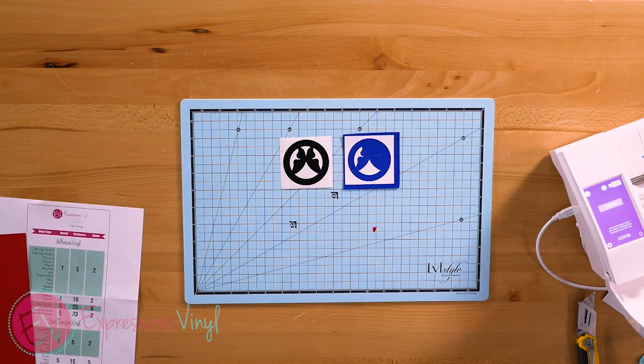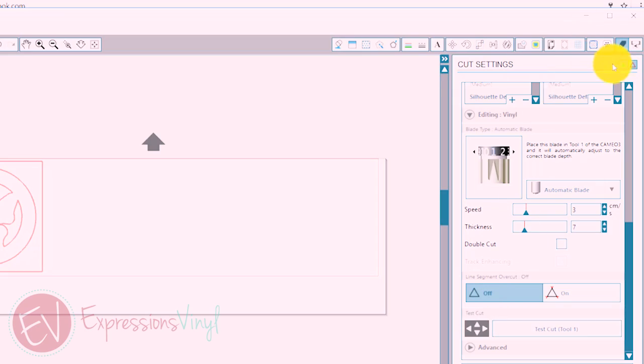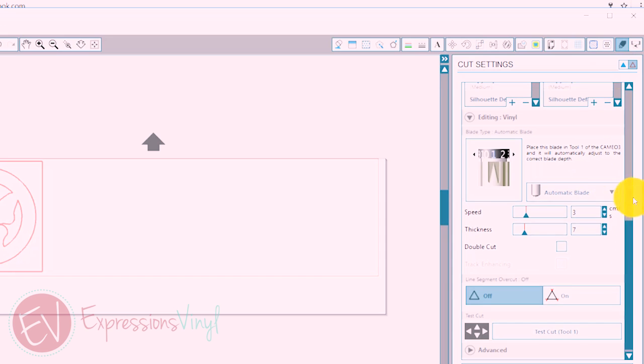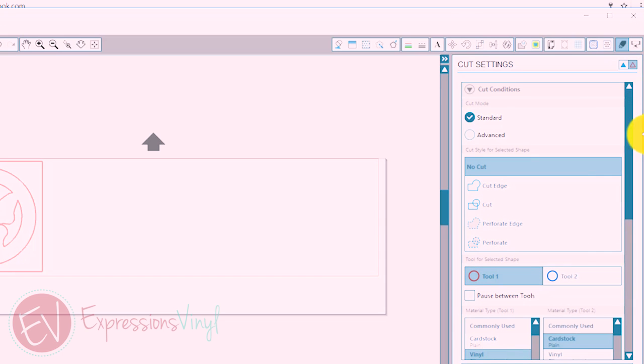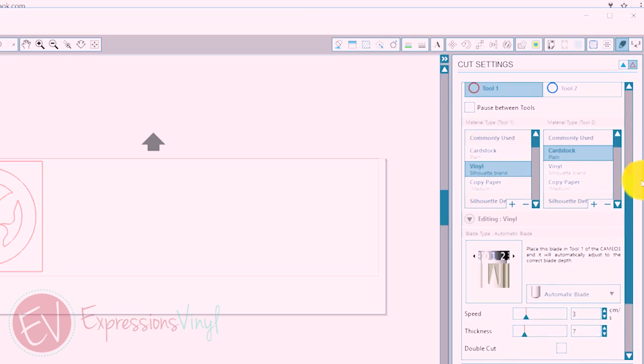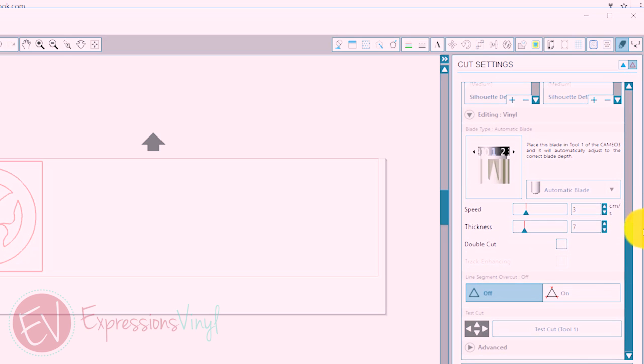Well, let's go ahead and try our custom settings. Okay, so back into your program, select your blade, select the tool that you're using. If you have the Cameo 2, that won't matter. Cameo 3, you have to select your tool.